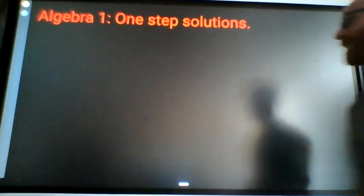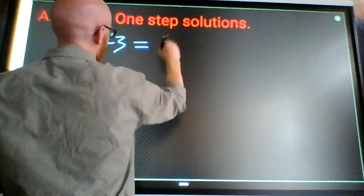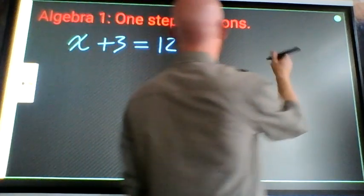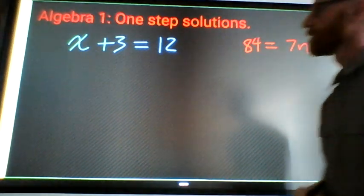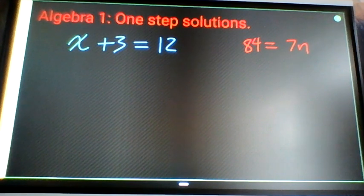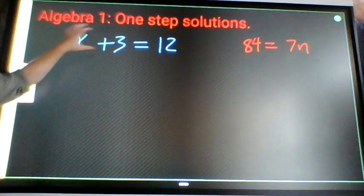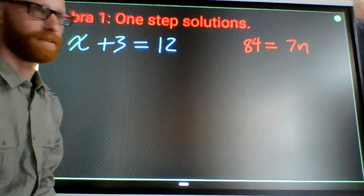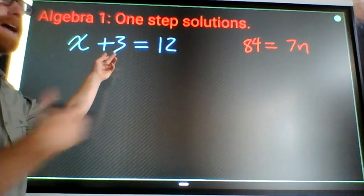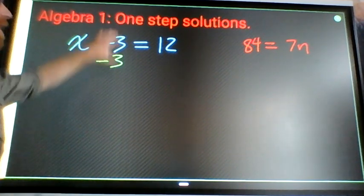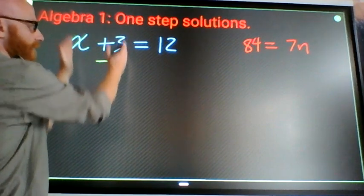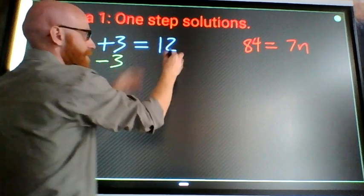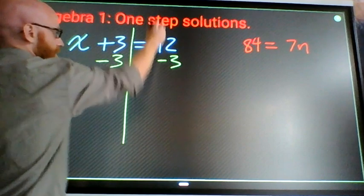Start simple, stay simple. For these one-step equations, one-step equations look like this: some number plus 3 equals 12, or like this: 84 equals some number times 7. The way we solve one-step equations is very simple. We ask ourselves: where's the variable, what's happening to the variable, how do I undo that? Right here, variable is x, what's happening to it? Plus 3. How do I undo that? Minus 3. So you write your minus 3 right underneath of your plus 3.